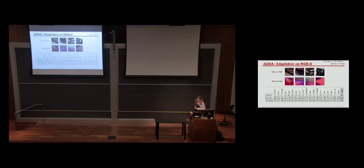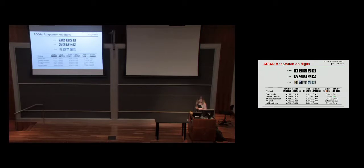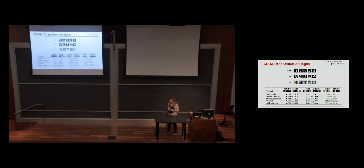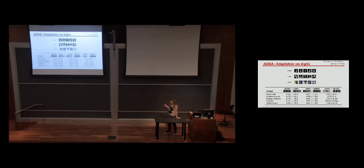Question: is this without data augmentation? We used standard data augmentation — cropping and injecting noise. Applying known transforms could help reduce domain shift, but it doesn't solve the problem. To do that you'd need to know exactly what changed between domains. I'm more interested in methods that can automatically learn what's changed between domains so we don't have to engineer a different solution for each shift.